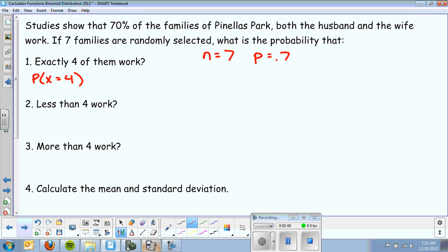So again, that's 7 families is like my fixed outcomes. I'm going to type in binomial PD. Now I'll show you how to enter it on your calculator.